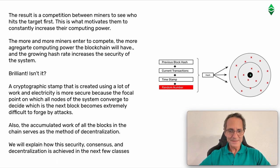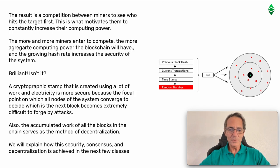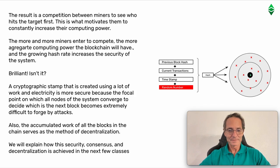Brilliant, isn't it? A cryptographic stamp that is created using a lot of work and electricity is more secure because the focal point on which all nodes of the system converge to decide which is the next block becomes extremely difficult to forge by attackers.